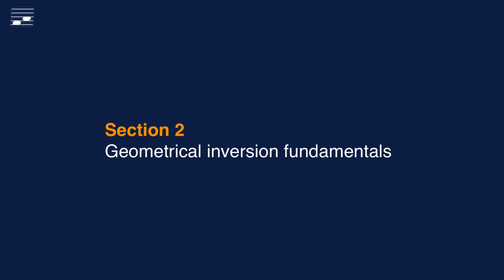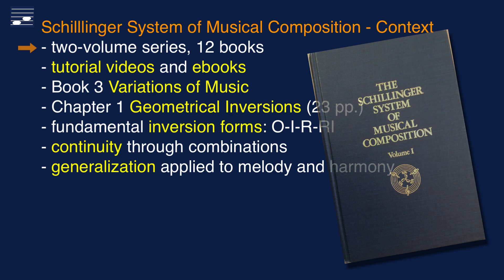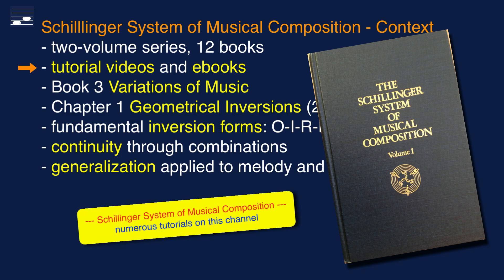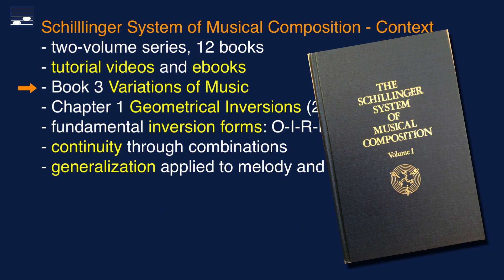Let's delve in and start with the fundamentals and the Schillinger system context. His System of Musical Composition is published as a two-volume set with twelve books on various music creation aspects. Quite a few subjects are already covered in my many tutorial videos and ebooks. Here the focus is on book three, Variations of Music, and more specifically on chapter one, which is about geometrical inversions.